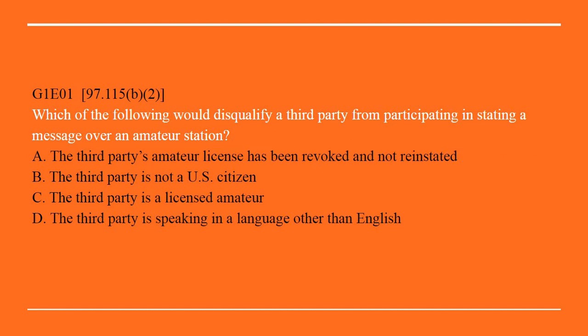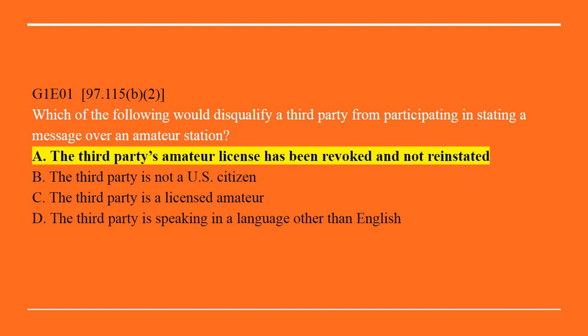First one, G1E01: Which of the following would disqualify a third party from participating in stating a message over an amateur station? A. The third party's amateur license has been revoked and not reinstated. B. The third party is not a U.S. citizen. C. The third party is a licensed amateur. Or D. The third party is speaking in a language other than English. Correct answer is A: The third party's amateur license has been revoked and not reinstated.